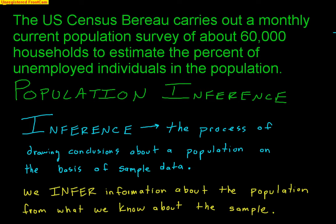Population inference is allowable as long as the sample was drawn randomly from your population. As long as those 60,000 people were chosen randomly, we can apply anything we learned from that sample to the population of all United States adults.